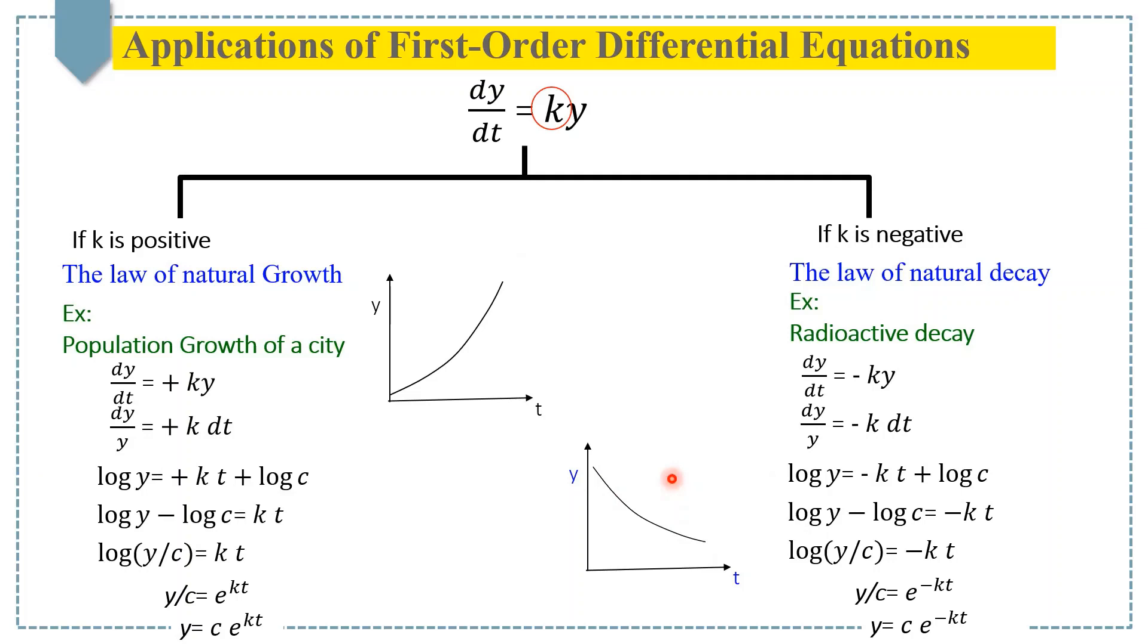In conclusion, we notice that depending on k, we get either functions with a positive or negative exponential, and both lead to different behaviors. One leads to exponentially growing process and another leads to exponentially decaying process. You can easily understand both from these two figures.